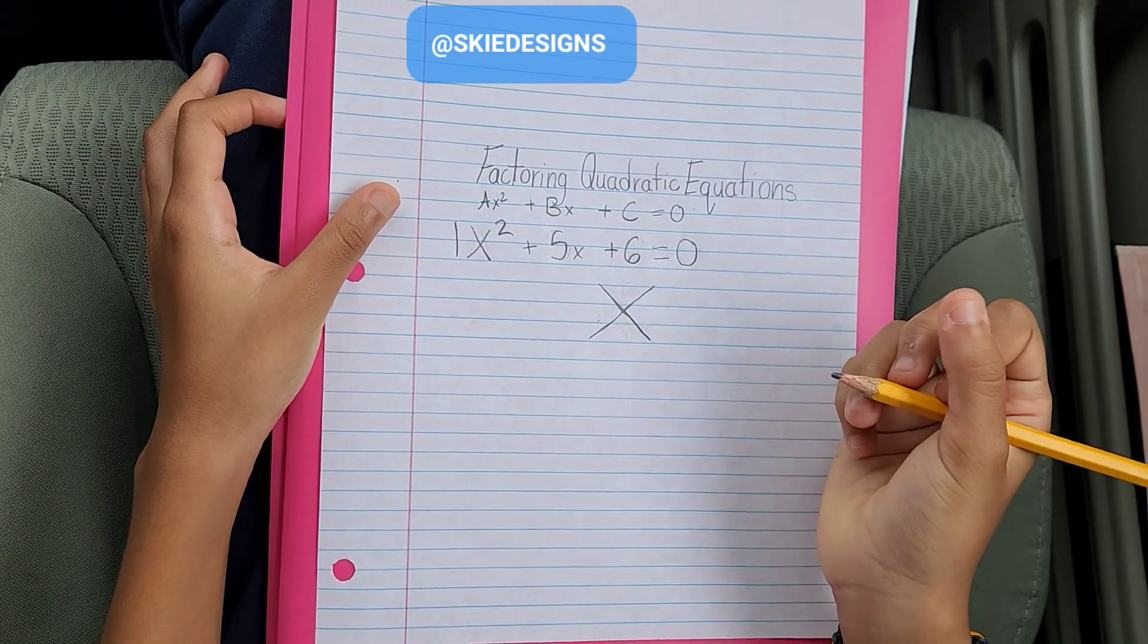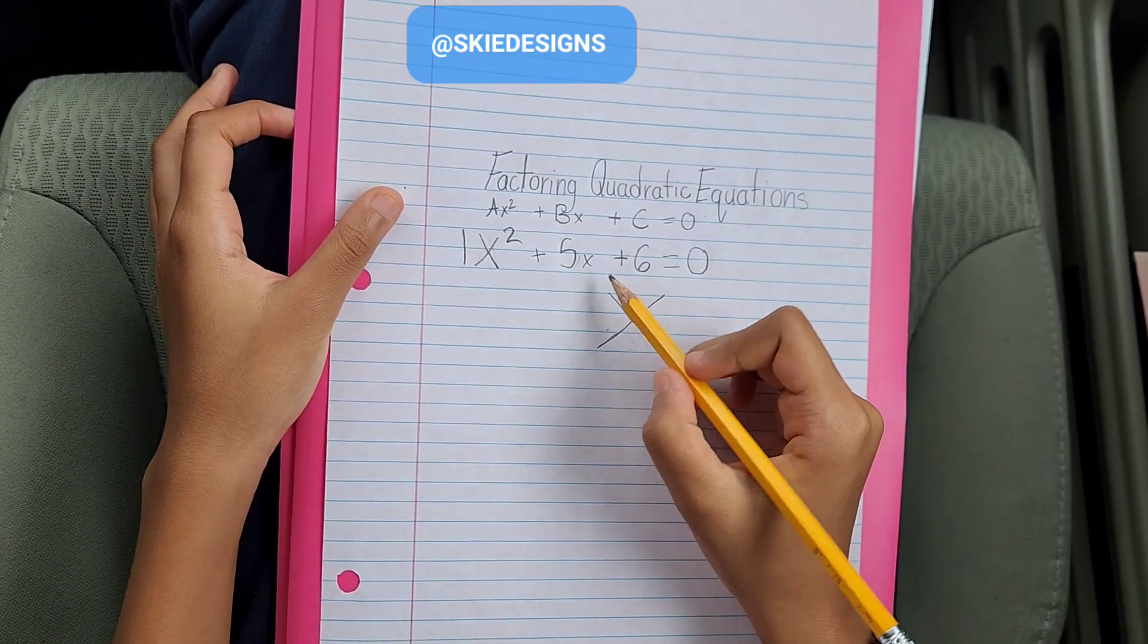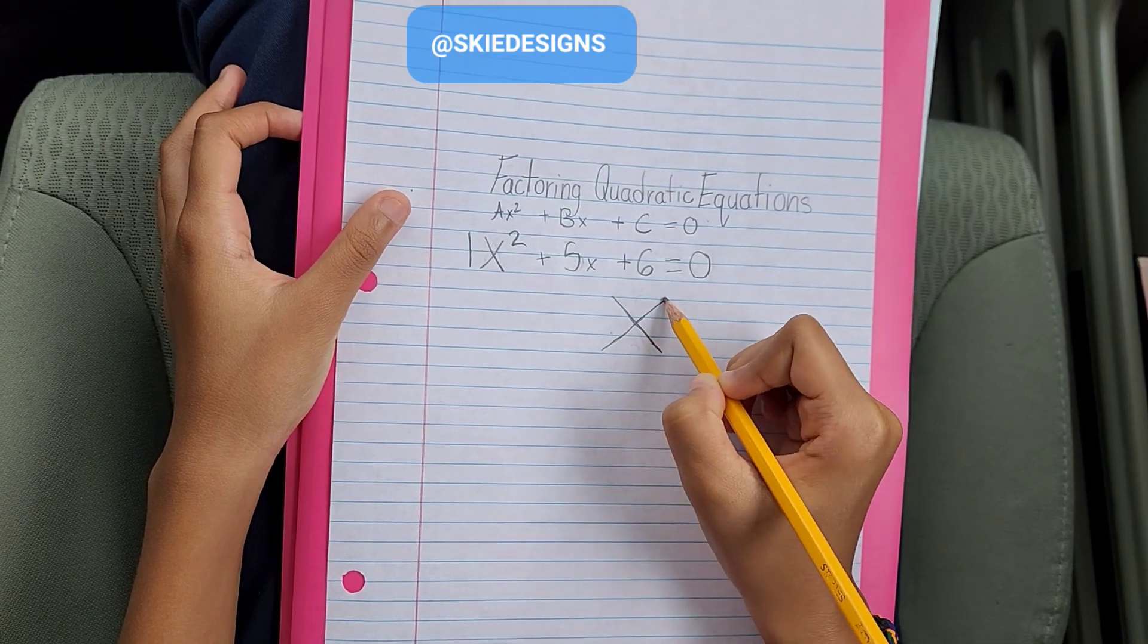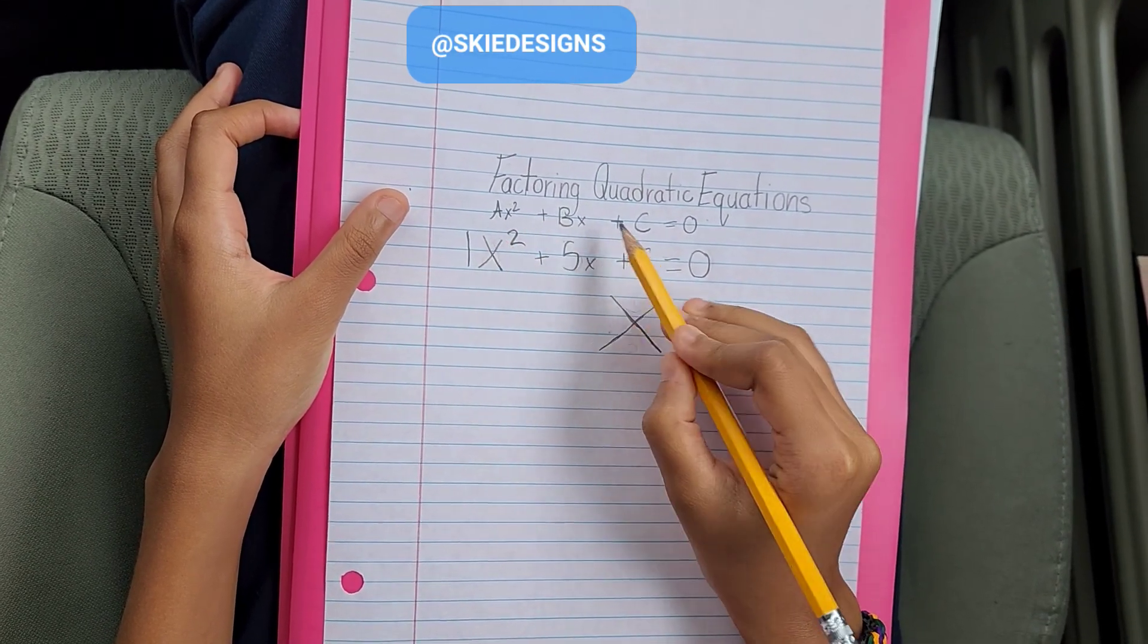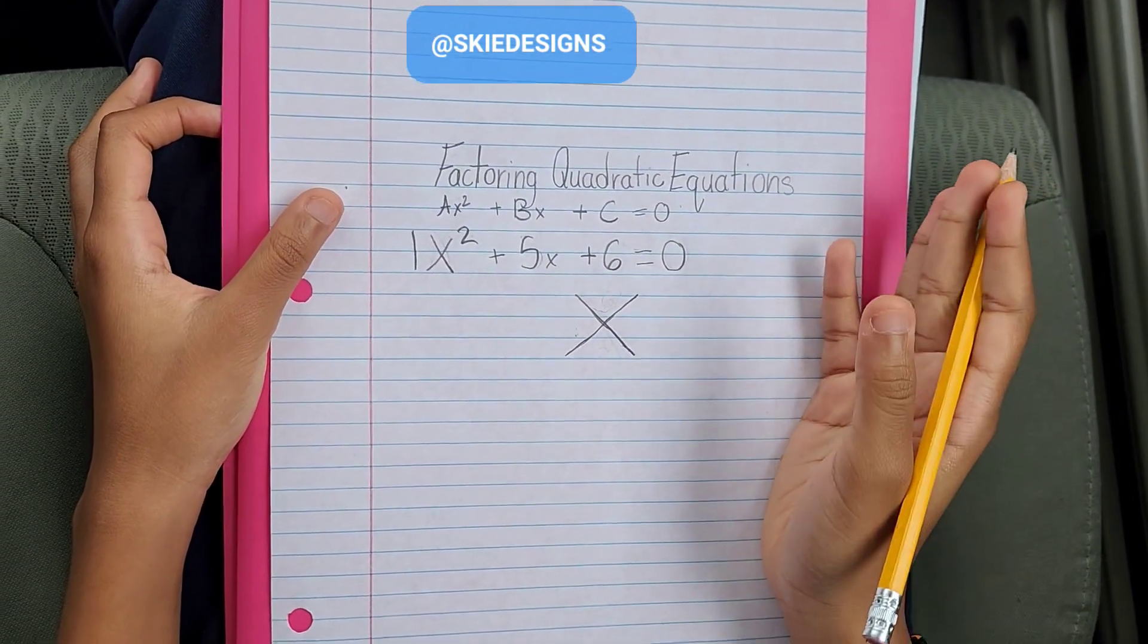Now, I'm going to do the method which I like to call the X method, which is where we draw an X as shown here. In the top we multiply a times c, and at the bottom we have b. So let me show an example.